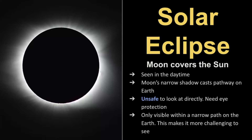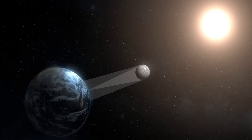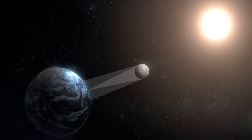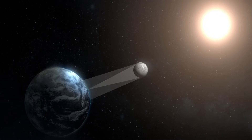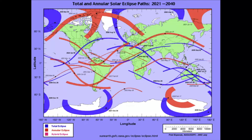The solar eclipse is when the moon covers the sun and they're always seen during the daytime. The moon's narrow shadow casts a pathway on the earth, and in order to see the solar eclipse you need to be along the path of totality. For the solar eclipse coming up on October 14th of 2023, here is that pathway of totality.